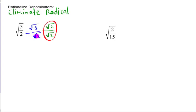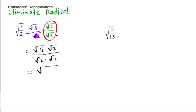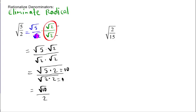Whatever I've done to the bottom of the fraction, I'm going to do to the top. Then I multiply: square root of 5 times square root of 2 over square root of 2 times square root of 2. That gives me the square root of 5 times 2 over the square root of 2 times 2. On the bottom, we have the square root of 4, and on the top we have the square root of 10. The square root of 4 is 2, so we end up with the square root of 10 over 2. One square root times itself eliminates the radical.